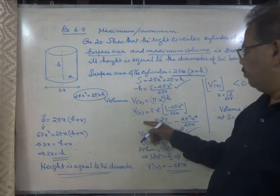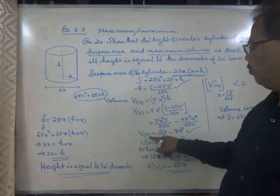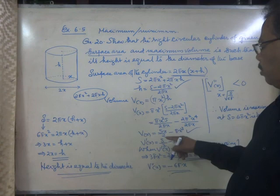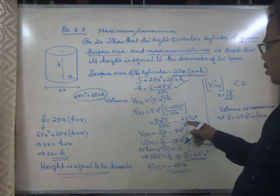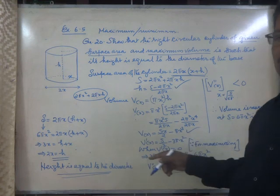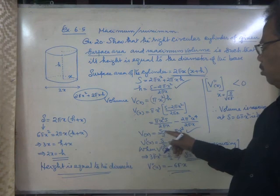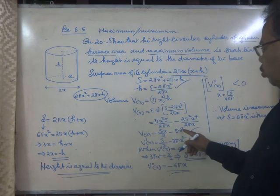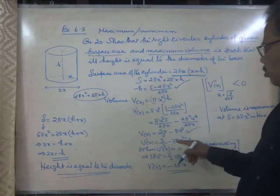On simplification we get a relation: Volume function V(x) equals Sx/2 minus πx³. Now the first derivative V'(x) is equal to S/2 into derivative of x is 1. Here it is negative π into derivative of x³ is 3x². So V'(x) is equal to S/2 minus 3πx².